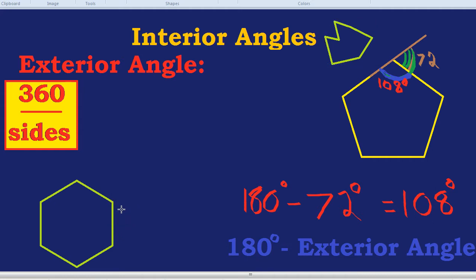First, we find the exterior angle by doing 360 degrees divided by the number of sides. A hexagon has six sides, so we do 360 divided by 6. 36 divided by 6 is 6, so 360 divided by 6 would be 60. This means that the exterior angle of a hexagon is 60 degrees. What would the interior angle be?